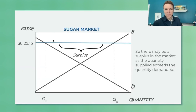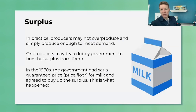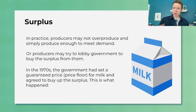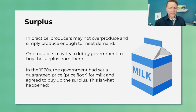What happens with the surplus? Do producers actually produce the excess amount? Often they won't — they know consumers will only buy so much. But sometimes producers can lobby the government to buy up the surplus. In that case it's a win-win for them: they get the higher price and can produce as much as they want.